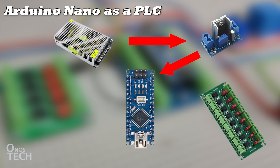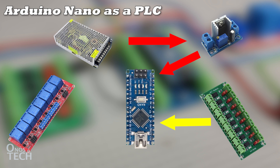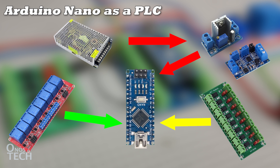The PC817 opto-isolator module should be connected to the digital inputs of the Nano. An opto-isolator relay module should go to the output of the Nano. Then a 4 to 20 mA current-to-voltage converter module connects to the analog input for process transmitters.